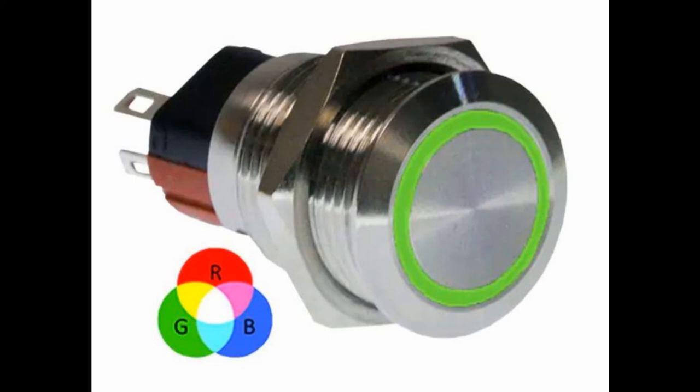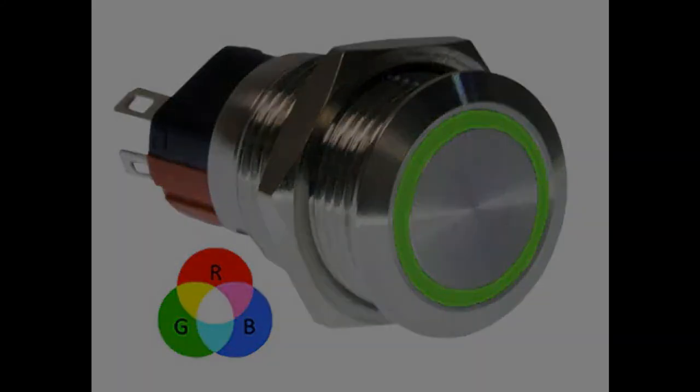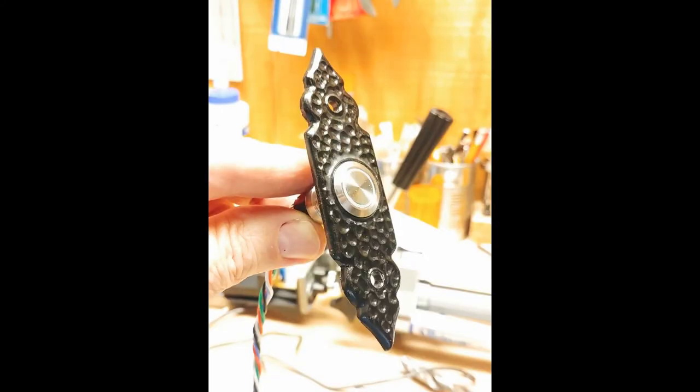If you mix these colors at different intensities, you can see any color you like. I picked this button because it has a metal body and fits into the existing escutcheon plate for the old button. On DigiKey, this was really the only option I had.